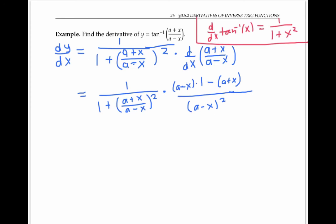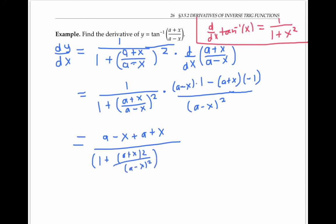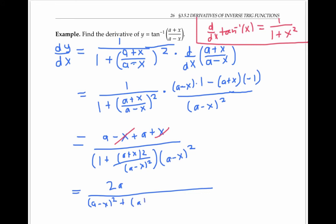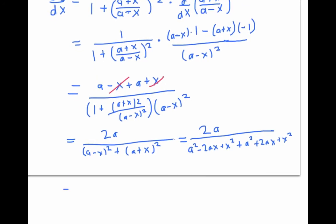Using the quotient rule on (a plus x) over (a minus x): put the denominator squared on the bottom, then low times d-high minus high times d-low. The derivative of a plus x is one, and the derivative of a minus x is negative one. Simplifying the numerator: (a minus x) times one minus (a plus x) times negative one gives a minus x plus a plus x, which equals 2a. Expanding the denominator gives (a minus x) squared plus (a plus x) squared, which simplifies to 2a squared plus 2x squared. The final result is a over a squared plus x squared.